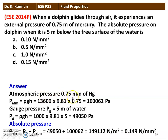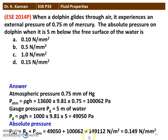Calculating atmospheric pressure from 0.75 m of mercury: P_atm = ρgH = 13600 × 9.81 × 0.75 = 100,062 Pa ≈ 100,062 Pascal. The gauge pressure at 5 m water column: P_G = ρgH = 1000 × 9.81 × 5 = 49,050 Pascal. Absolute pressure = gauge pressure + atmospheric pressure = 49,050 + 100,062 ≈ 149,112 N/m², which equals approximately 0.149 N/mm². The correct answer is option D: 0.15 N/mm².